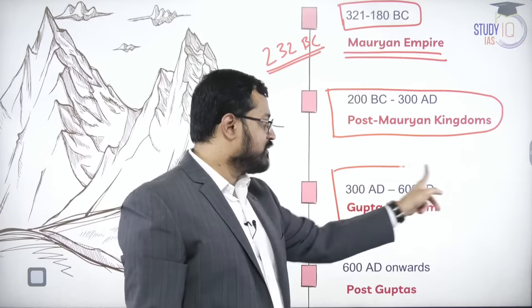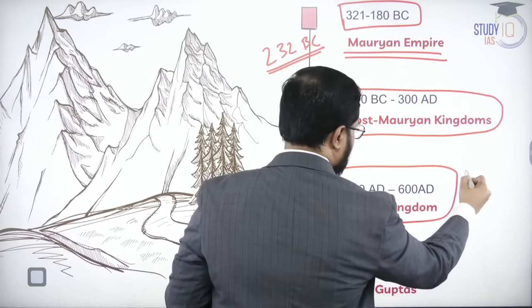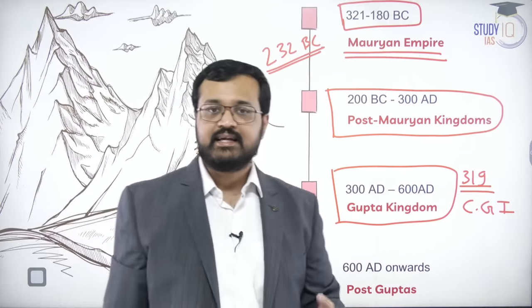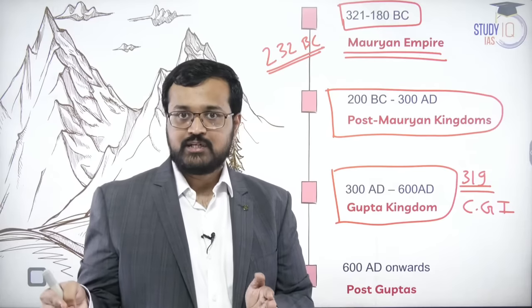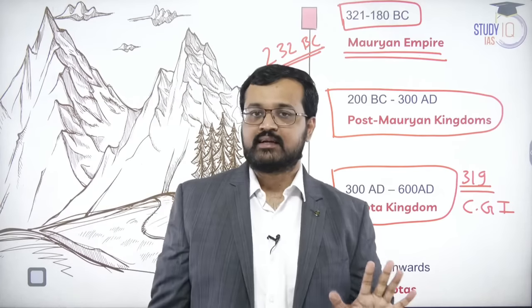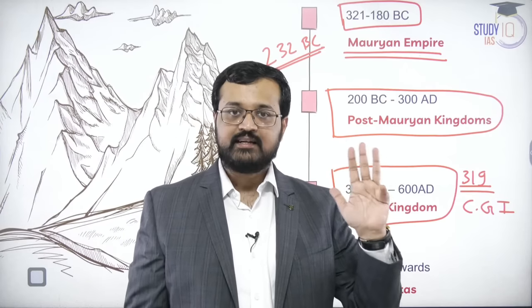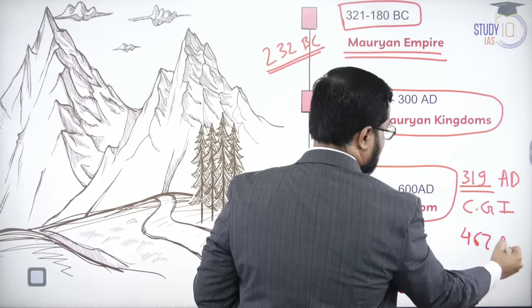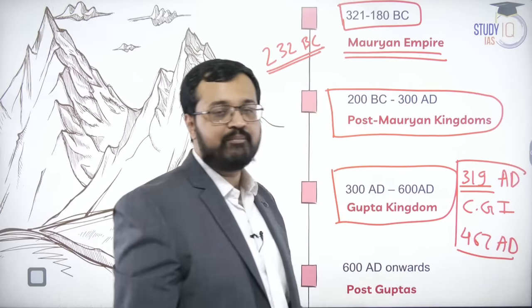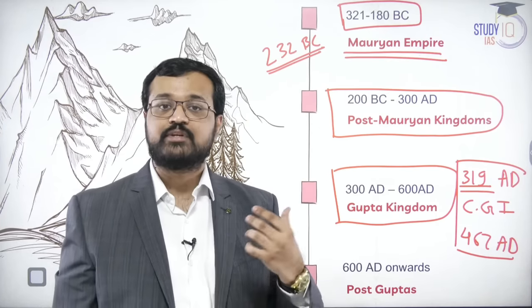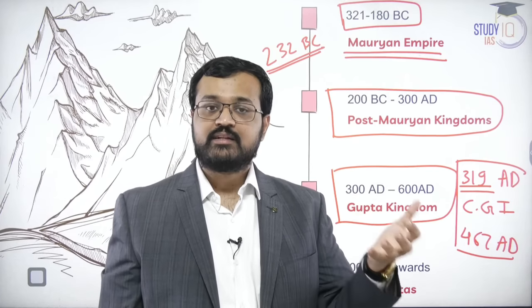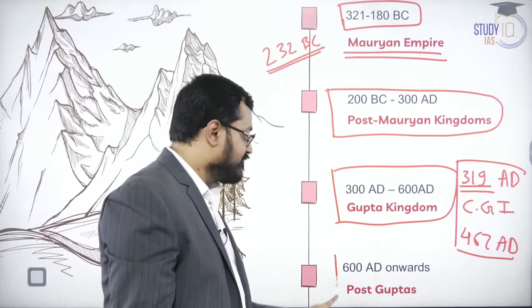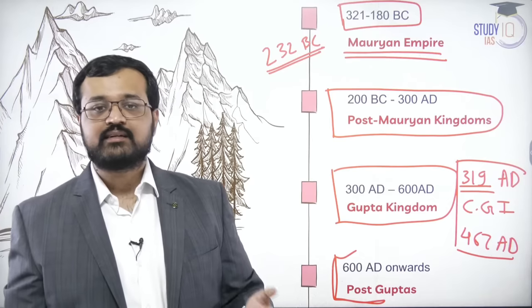Fortunately for India, around 319 AD, Chandragupta the First ascended the throne and the Gupta dynasty began, ushering in another golden period. The Gupta dynasty had five great kings: Chandragupta I, Samudragupta, Chandragupta II, Kumaragupta, and Skandhagupta — roughly from 319 AD to 467 AD. These five kings again established some sort of political unity in India and had notable polity, economy, and society which we will study in later lectures.